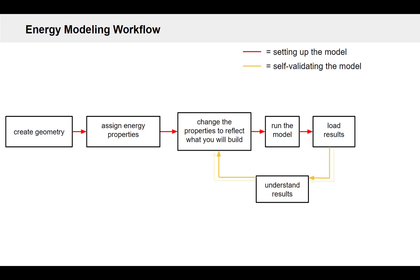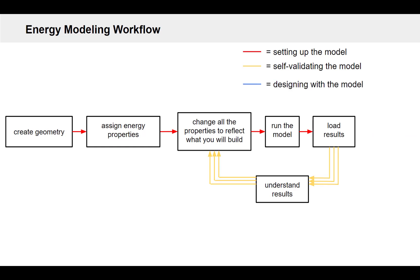Chances are there's something you're going to want to change about your model to make sure that it is actually a reflection of what you would really build and how that building would really be used. You're probably going to do this a few times over, with a few different properties, as you look through those results and try to understand them and see how the model is working — before finally you end up with something useful. This is a fairly iterative process, all just to get to a breakeven point — just to have a model that is a decent enough representation of something that would actually be built.